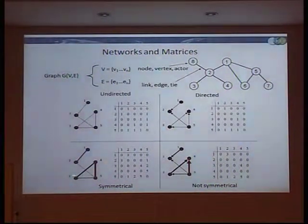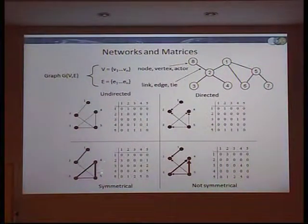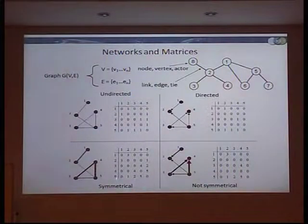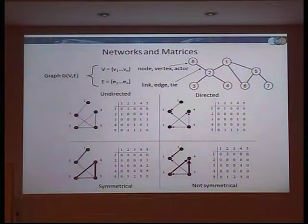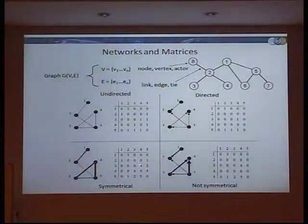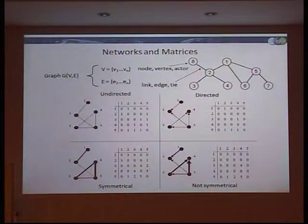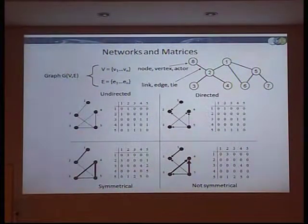Networks can also be weighted. For instance, the weight might be the number of years you've been friends — so nodes four and five might have been friends for 20 years, whereas two others might have been friends for only five years. The thickness of the line can designate a continuous variable as the weight. The characteristic difference between undirected and directed is that undirected is symmetrical: the numbers above the diagonal are the same as below. Whereas in a directed network, the values are not necessarily symmetric.